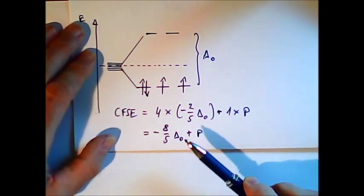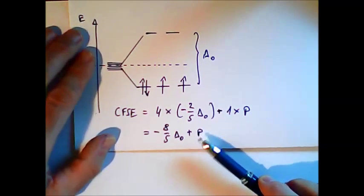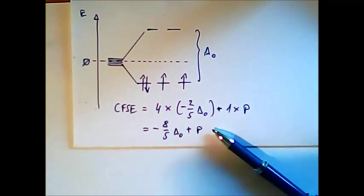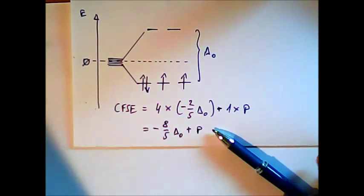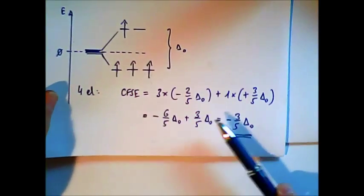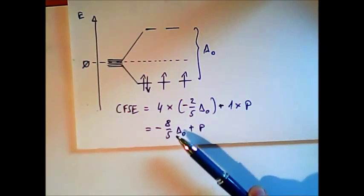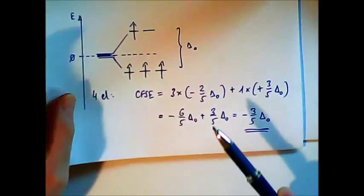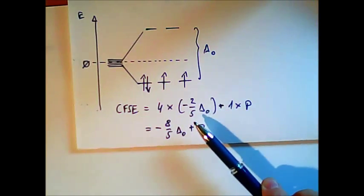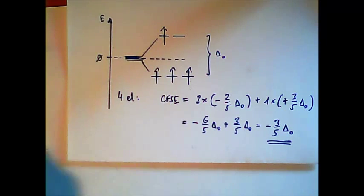Now it depends on the values of delta-O and P which configuration is better for d-4. We cannot distinguish which one is better right now — we have to know the values of delta-O and P to decide which configuration is better for a specific d-4 case. And that's what we are going to do right now.